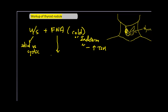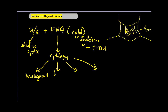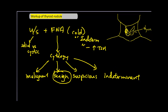From the fine needle aspiration, there are a few possible outcomes: malignant, benign, suspicious, or indeterminate. The only outcome that requires no further intervention is benign, as the last three — malignant, suspicious, and indeterminate — all carry a chance of cancer and would require either further surgical intervention or follow-up.